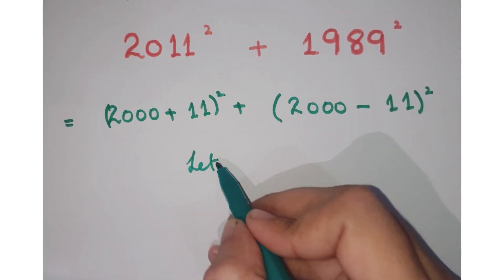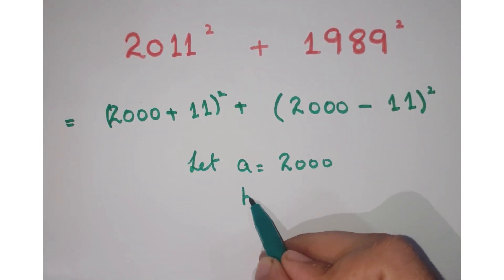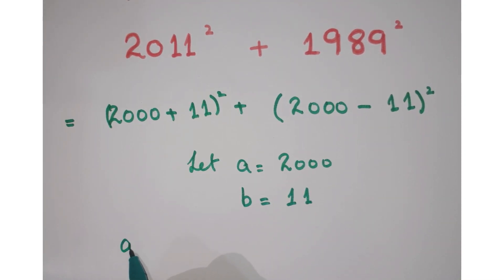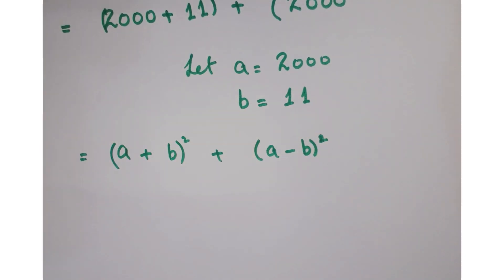Assume that a equals 2000 and b equals 11. So just replace it with whatever you have assumed, that is a plus b square plus a minus b square. Now as you know, you can expand it by using an algebraic identity.